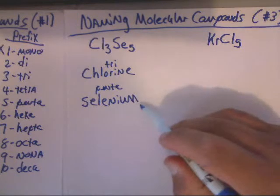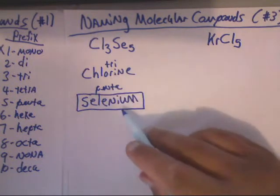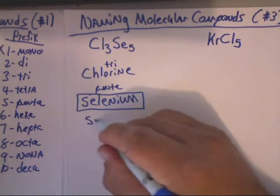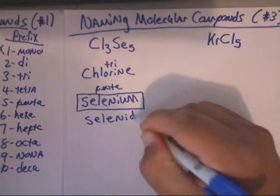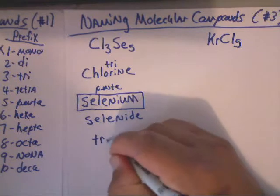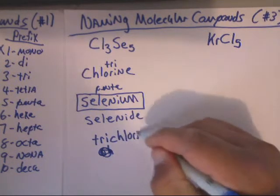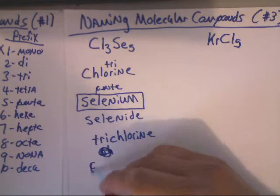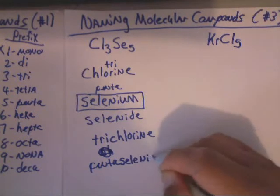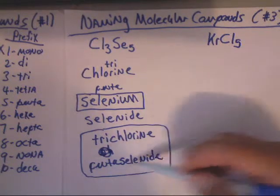Now we're almost done, except this has got to end in -ide instead of -ium, so let's take care of that. That's a quick fix — anything that ends in -ium, you just drop it off and add -ide. So that's S-E-L-E-N-I-D-E. So this one is named trichlorine — C-H-L-O-R-I-N-E — penta, P-E-N-T-A, selenide, S-E-L-E-N-I-D-E. And that's all there is to it.